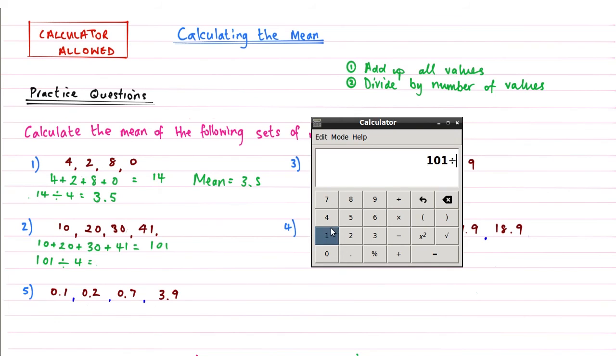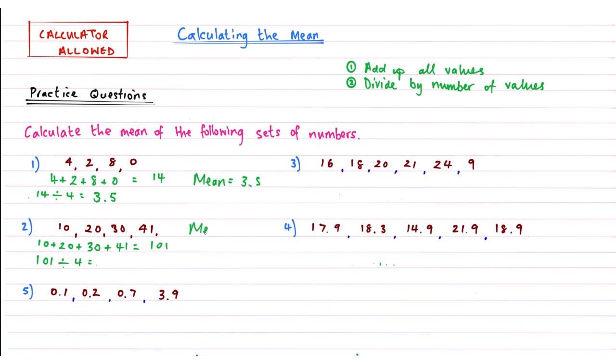And now I need to do 101 divided by 4 values again. So 101 divided by 4, and then that gives me a mean of 25.25. I'll just write that down there as well.